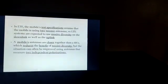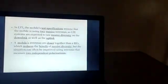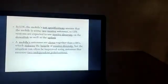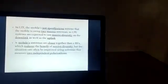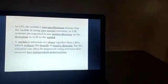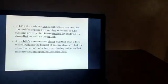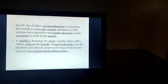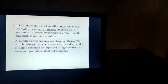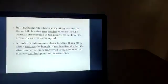In LTE, the mobile test specification assumes that the mobile is using two receive antennas. LTE systems are expected to use receive diversity on the downlink as well as the uplink. Mobile antennas are closer together than base station antennas, which reduces the benefit of receive diversity, but the situation can often be improved by using antennas that measure two independent polarizations.